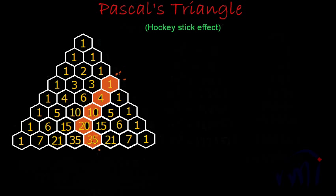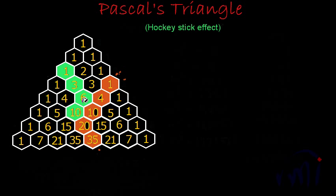But if I take this hockey stick starting from the left hand side of the triangle, then this bend should also be towards the left. So this 10 will be the sum of 6 plus 3 is 9, plus 1 is 10. So this 10 is actually the sum of all the numbers in the stick, in the straight line.